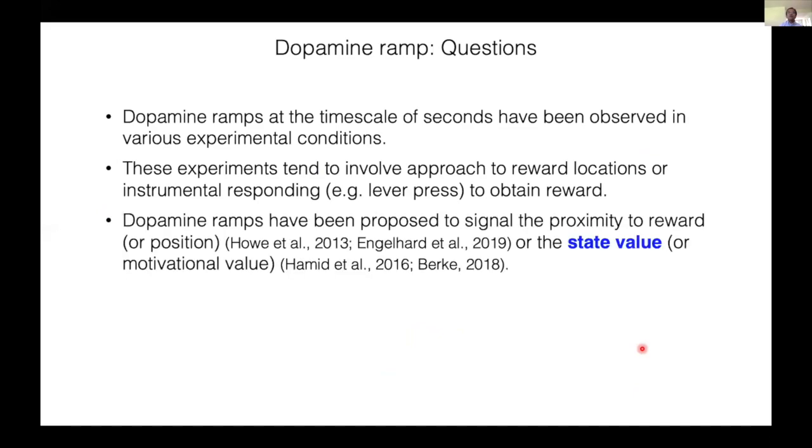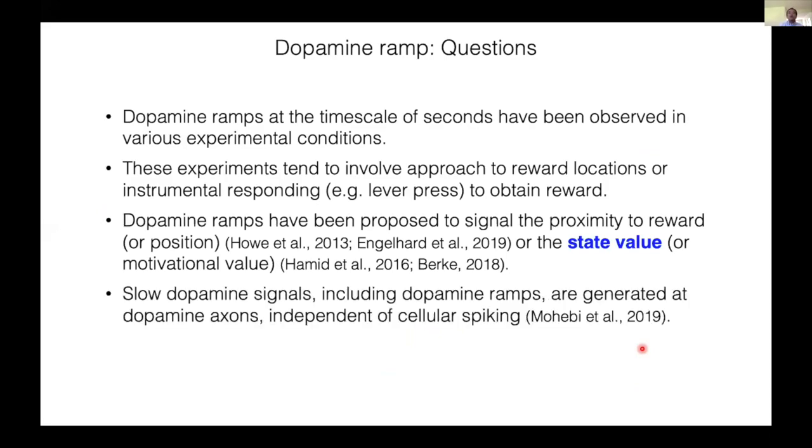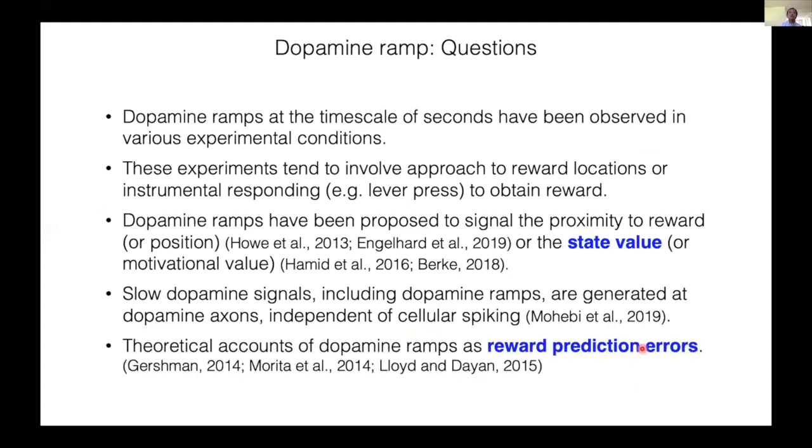Most of these studies used cyclic voltammetry in the nucleus accumbens that measures dopamine concentration, yet dopamine ramps are also observed in single cell calcium signals in the VTA. These examples show that dopamine ramps at the time scale of seconds can occur in various experimental conditions which often involve approach to reward locations or instrumental responding to obtain reward. Dopamine ramps have been proposed to signal the proximity to reward or encode state value or motivational value.